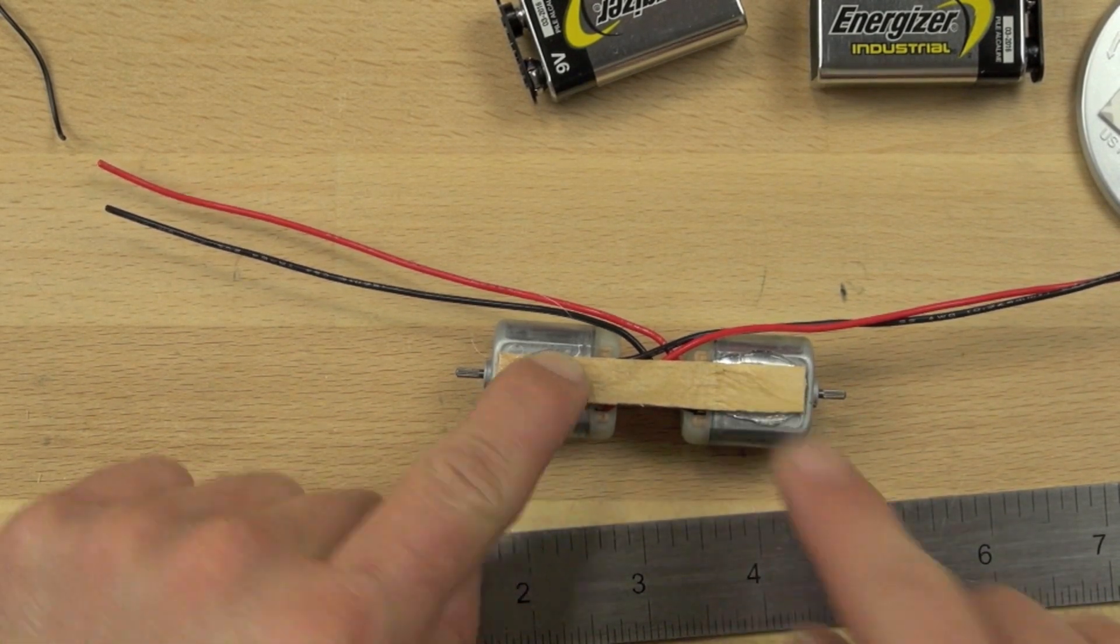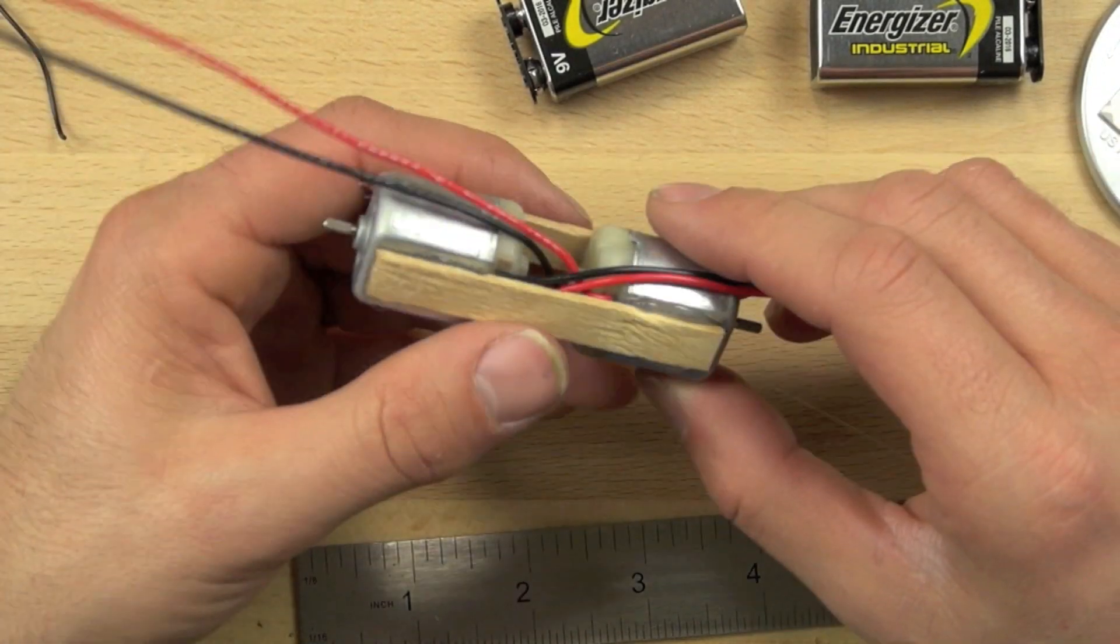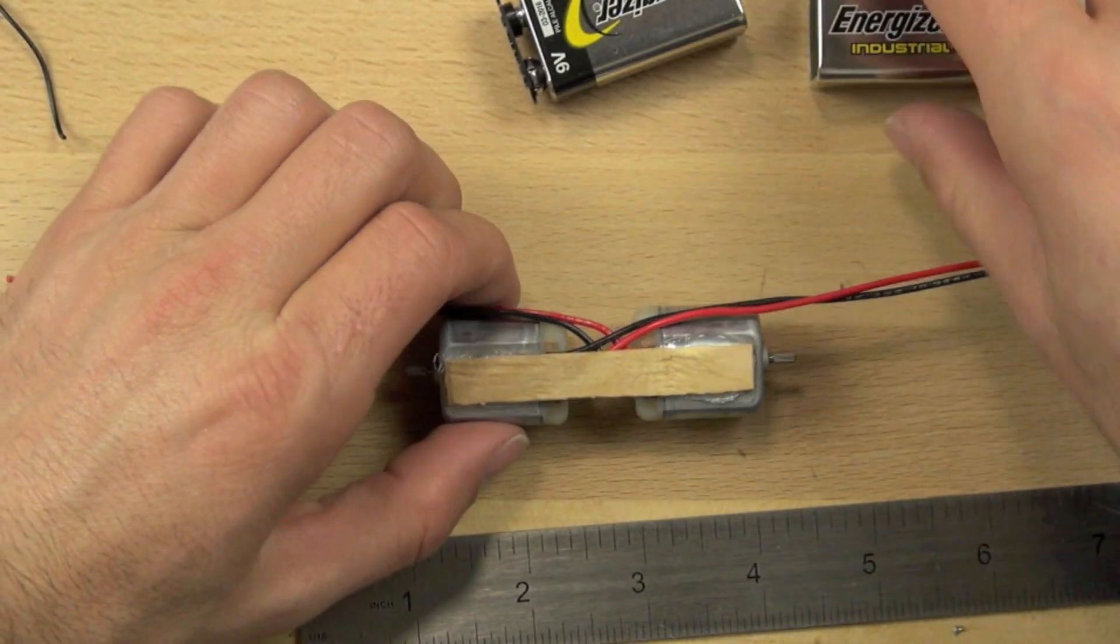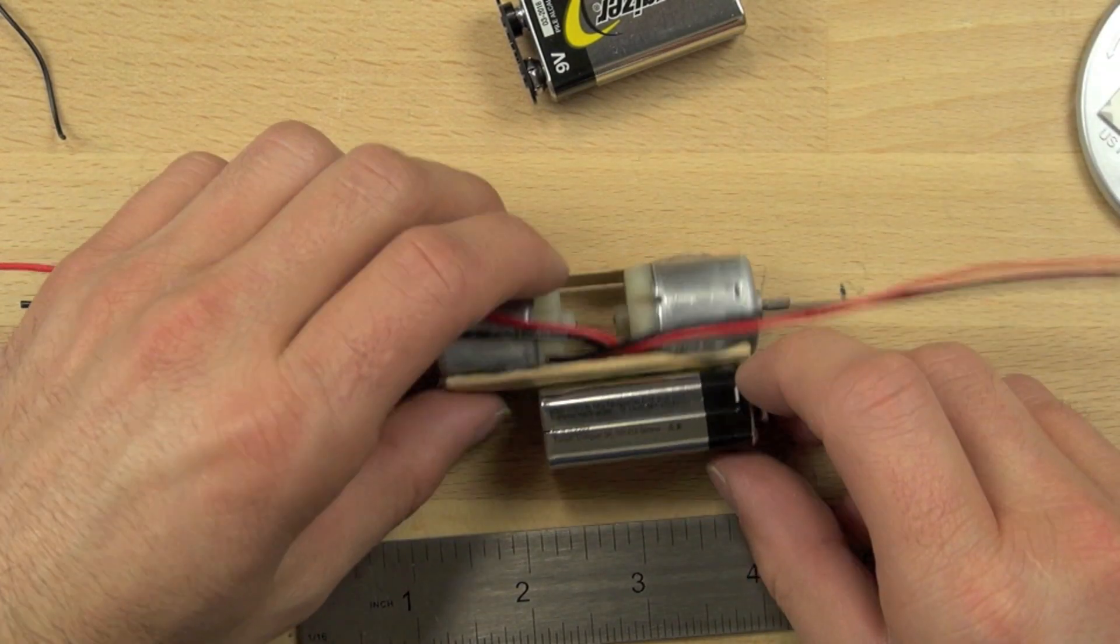Make sure that the hot glue has turned a milky color before you let go of it, otherwise it won't be totally in place. And you want to make sure you push down pretty hard on that to get it to line up right.